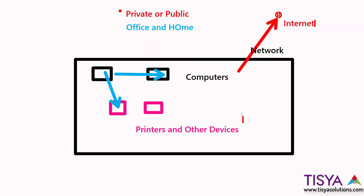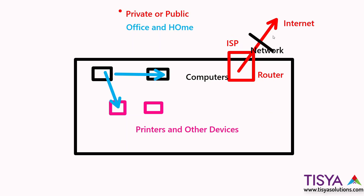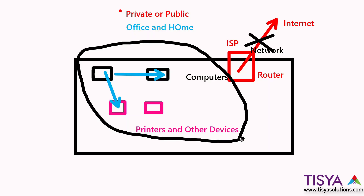When you set up a network at home or at the office and connect it to the internet, an internet service provider typically provides you with a router. Keep in mind that even if your router has no internet connectivity — perhaps due to an ISP problem — your local network at home or office is still able to communicate internally. You can still use network resources at your office even without internet access.